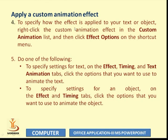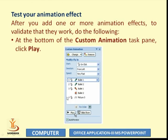To specify how the effect is applied, right-click the custom animation effect in the list and click Effect Options. You can configure effect timing, text animations, and tabs. After adding one or more animations, click Play at the bottom of the Custom Animation task pane to test your animation.